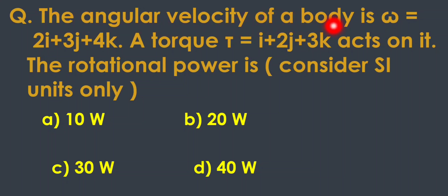The angular velocity of a body is 2i plus 3j plus 4k. A torque i plus 2j plus 3k acts on it. The rotational power is, consider SI units only: